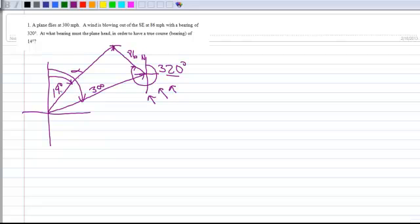So, our true course bearing is 14 degrees. All right. Let's draw a picture of the situation. Let's draw a picture of the triangle. So, here's the triangle. So, the length of this is 86. The length of this is 300. And again, there is no angle directly in the triangle.